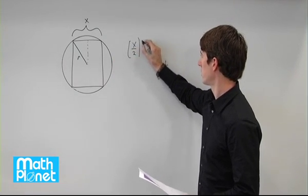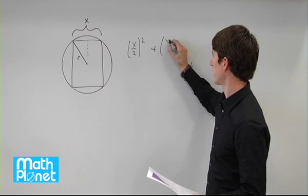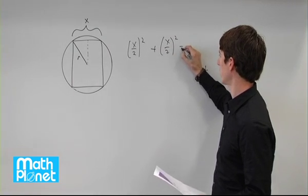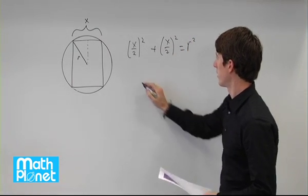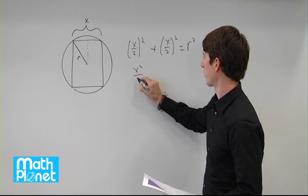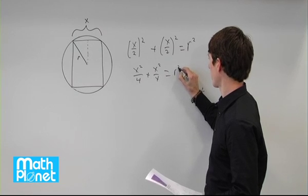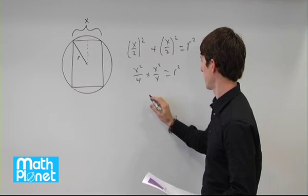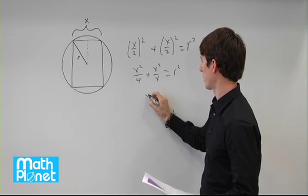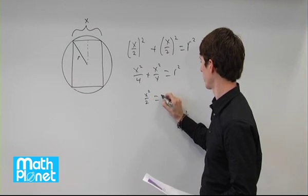x over 2 squared plus x over 2 squared equals r squared. This gives us x squared over 4 plus x squared over 4 equals r squared. This gives us 2x squared over 4, or x squared over 2 equals r squared.